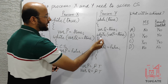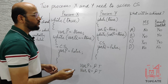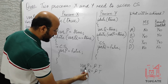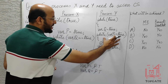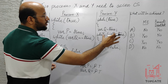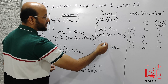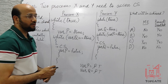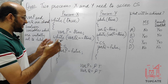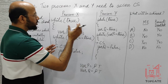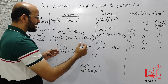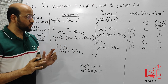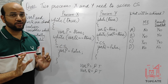Process Y executes: while(P == true). It checks whether P is true. Since P is true, the condition is true, so it also enters the while loop and goes into the critical section. We can now see that both process X and process Y are able to enter the critical section at the same time.